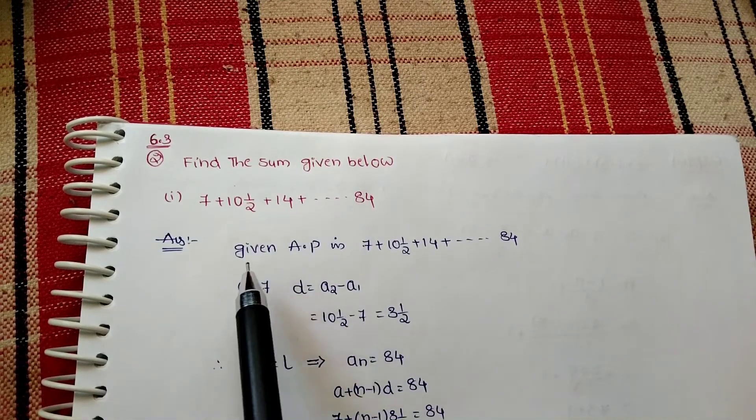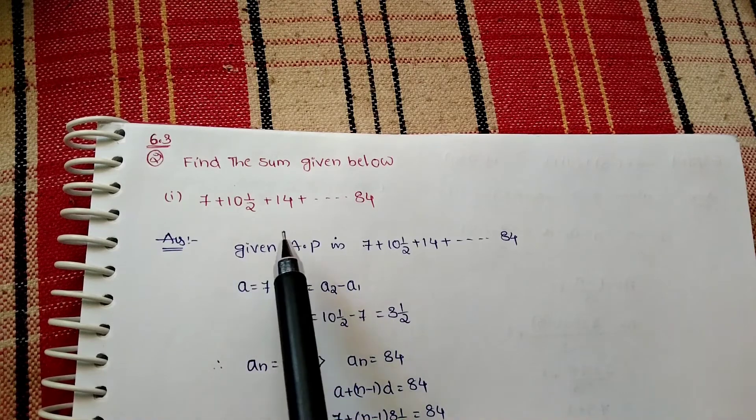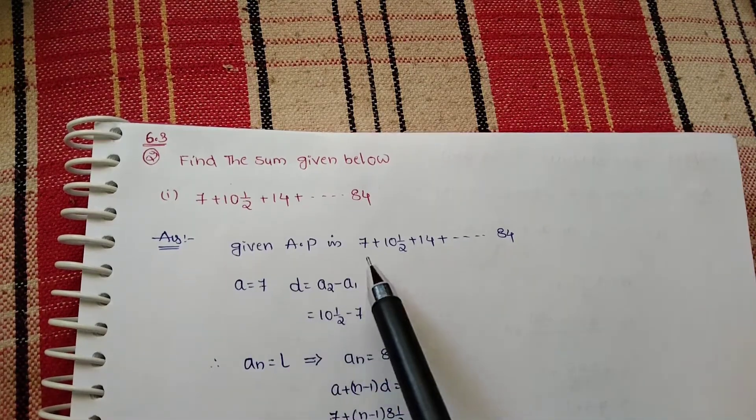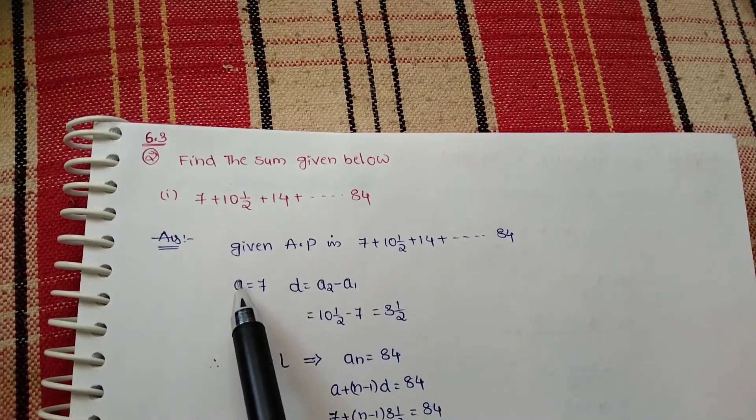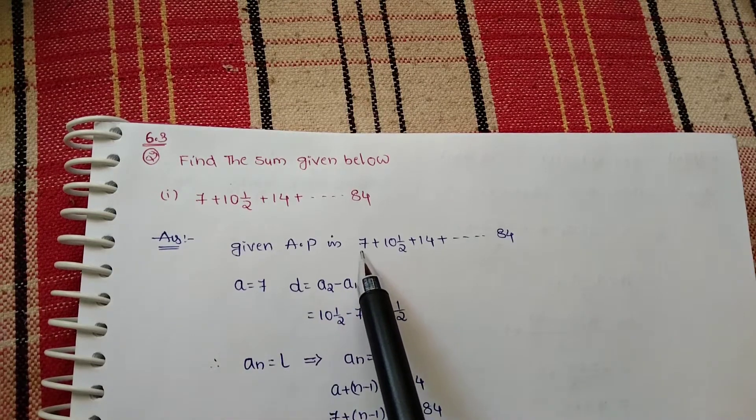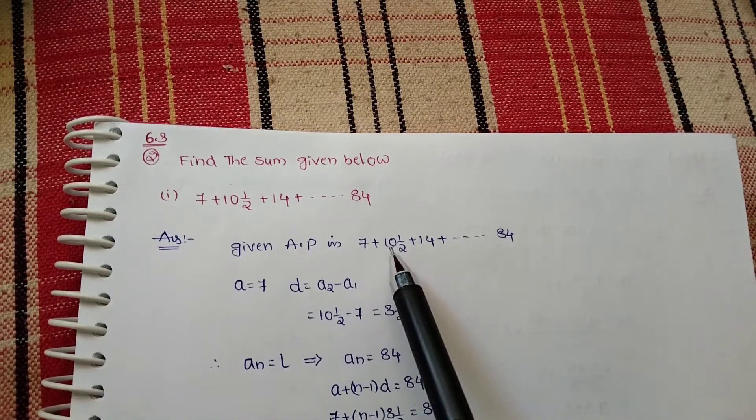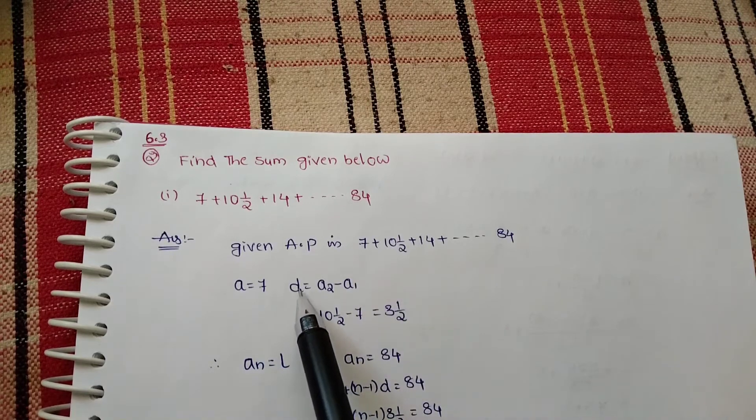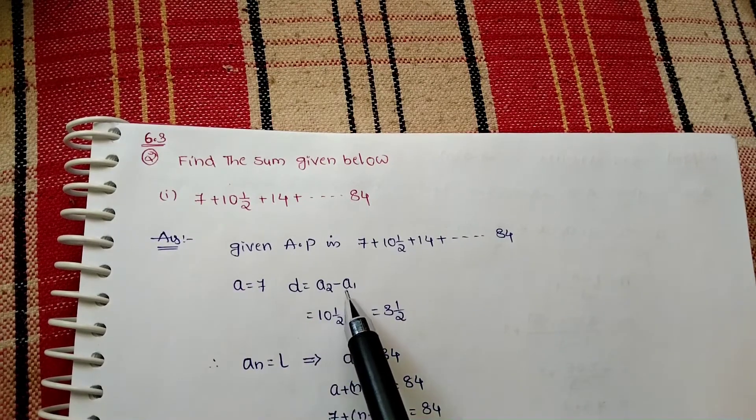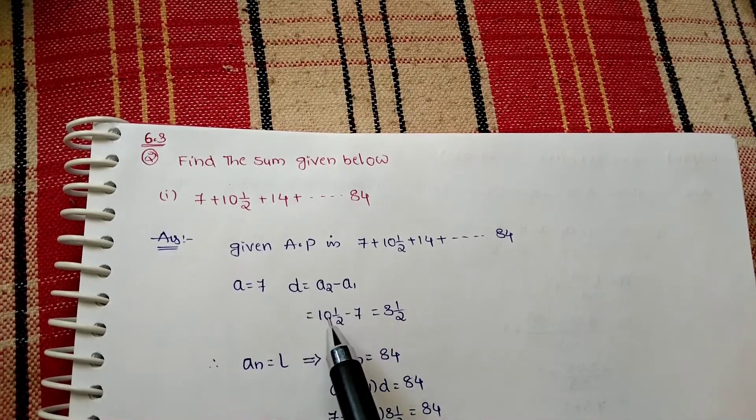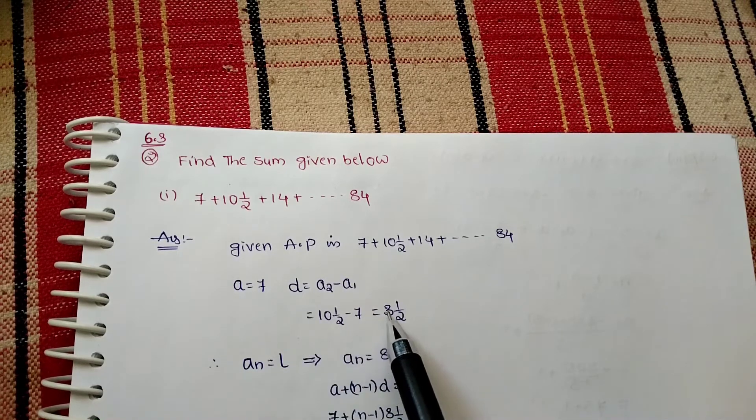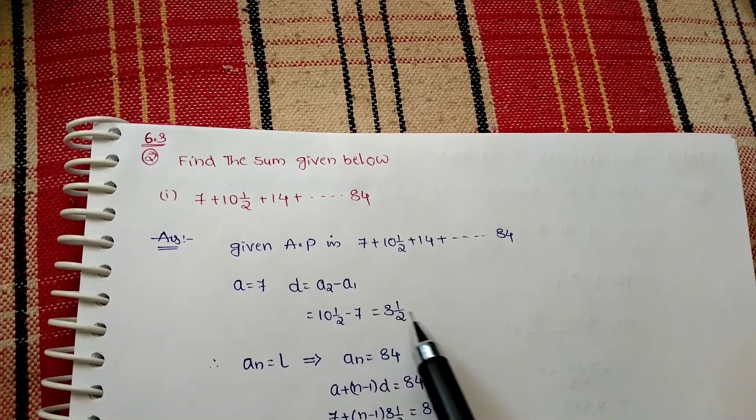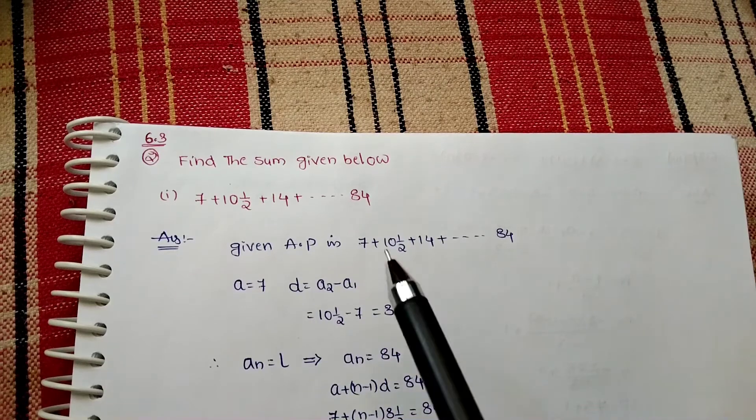Answer: Given AP, from that we can write a equals 7. Why? Because this is the first term of this AP, right? And with the help of a2 minus a1, we can find the d, right? d equals 3 and 1/2, right.